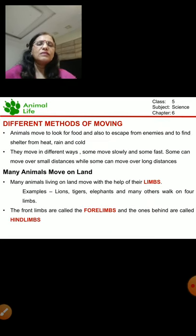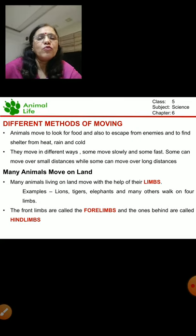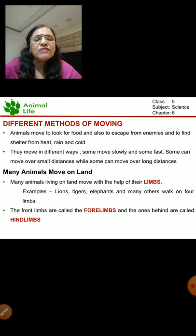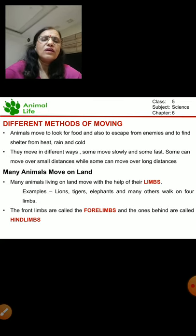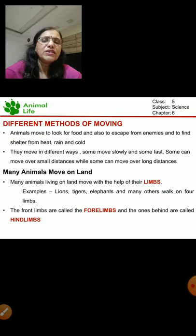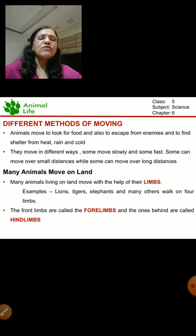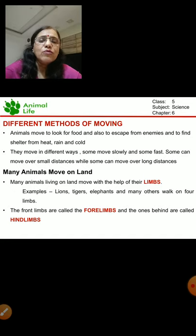After this, there are different methods of moving. Moving means movement. How do we move? We move with our limbs — our legs and hands are known as limbs. Why do animals have to move? Animals move to look for food, to escape from enemies, and to find shelter from heat, rain, and cold. Different animals move in different ways because some are land animals, some are water animals, and some are aerial animals. Some move slowly, some move fast, some can move over small distances while some can move over long distances.